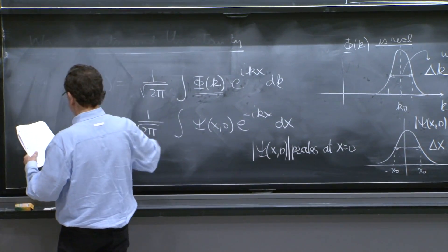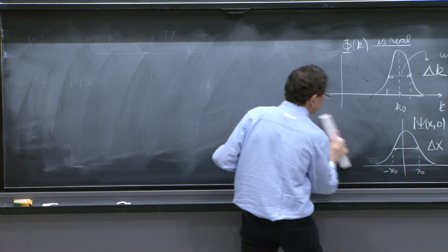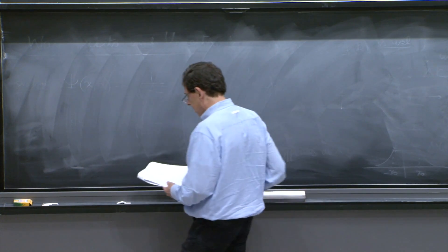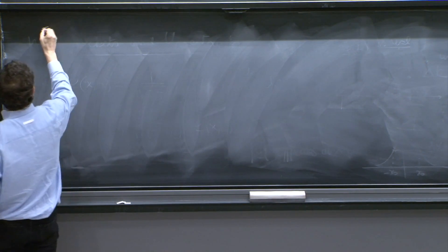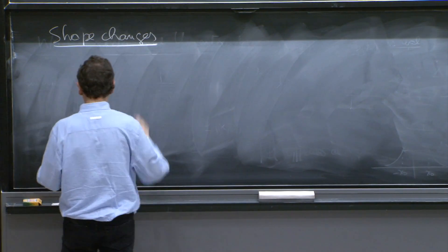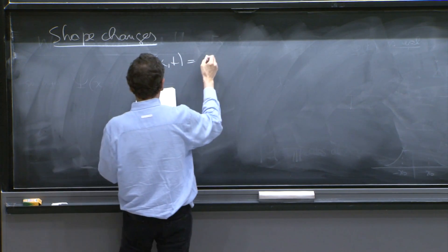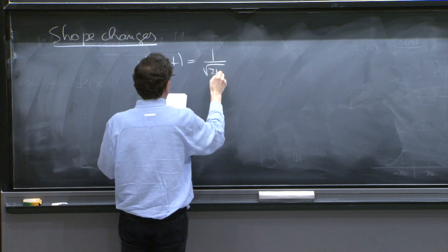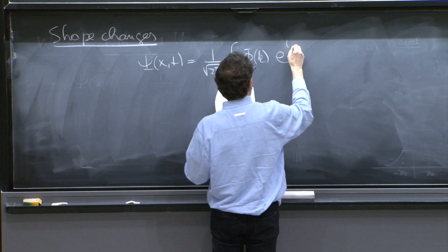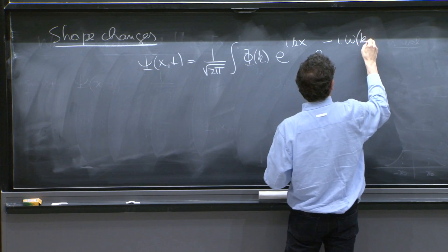It's still wave packets, but now we have to go back and add some time to it. So shape changes. We had psi of x and t equal to 1 over square root of 2 pi, integral phi of k e to the i kx e to the minus i omega of k t.